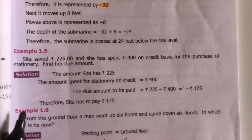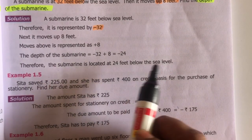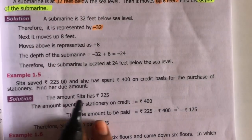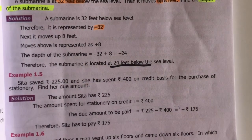So, the submarine is located at 24 feet below the sea level. Below the sea level. Negative means below. So, 24 feet below the sea level. That is the right answer.